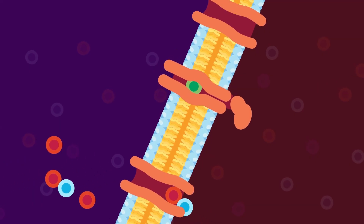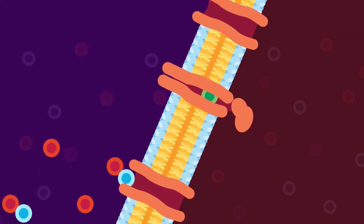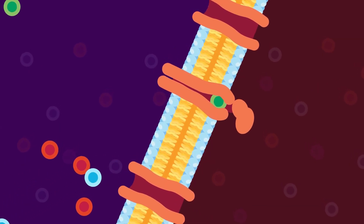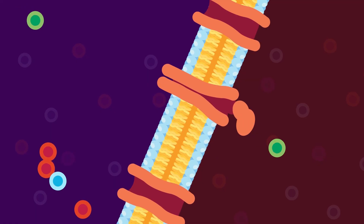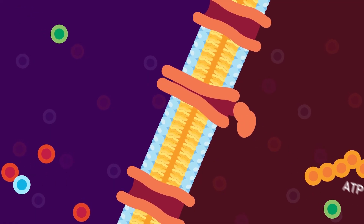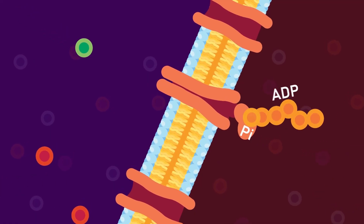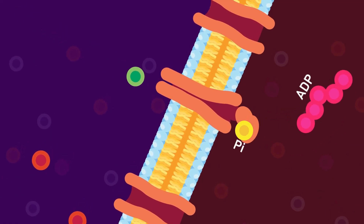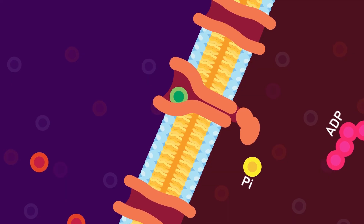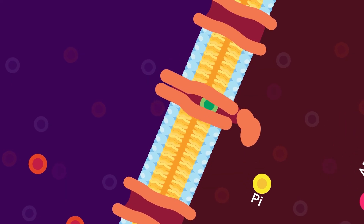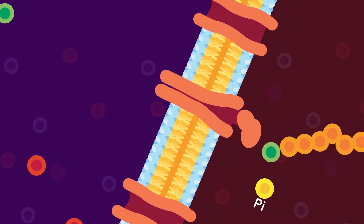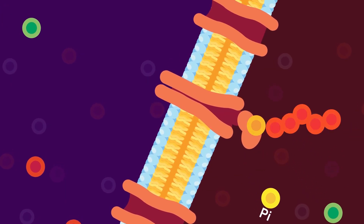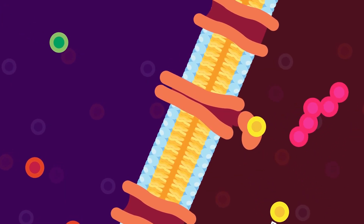Cations move inside the cell via ATPase. ATPase changes configuration as it binds the cation, then transports the cation into the cell and changes back its configuration to bind another cation. This process is aided by the hydrolysis of ATP.